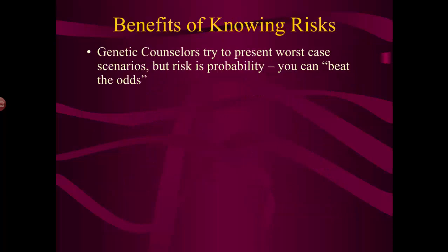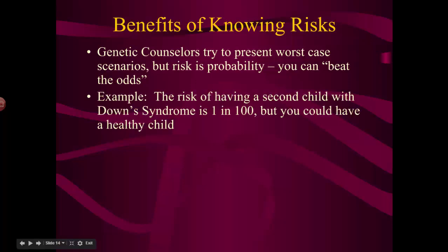Why would you want to know this? Genetic counselors were developed to help people who were thinking about, for example, having children, or looking at their own futures — to give them the worst-case scenario based on what they could find out through family studies and blood tests. Here's your worst-case scenario, but remember, it's just a probability and you can always beat the odds. If you think about gambling, the probability in certain games might be 35 to 1 — that means 35 chances against your one chance that you're going to win, but you could win. So when you're looking at risks, you've got to weigh the odds.